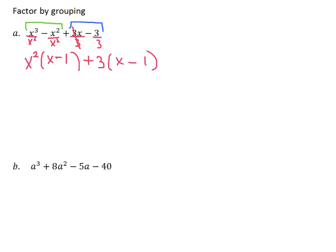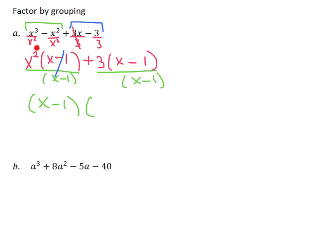Take a look — something special happened here, and this works with all factor by grouping problems. The expressions inside the parentheses, the x minus 1s, match up. So now we're going to factor one of those out. Both terms have x minus 1 in common, so I write x minus 1 out front — that's like dividing each term by x minus 1. These cancel out, leaving x squared in the first group and positive 3 in the second. We now have this factored into the product of two binomials.